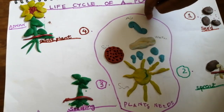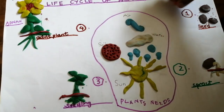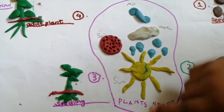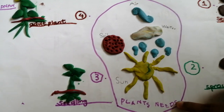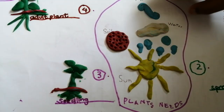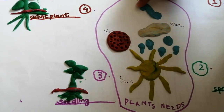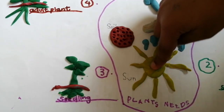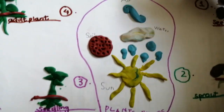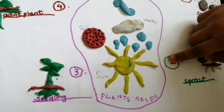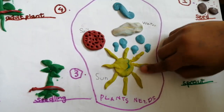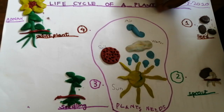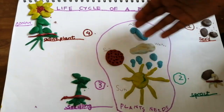You see a circle here? Now I will explain this. Plants need air, water, soil, and sunlight to grow. And we learned this all.